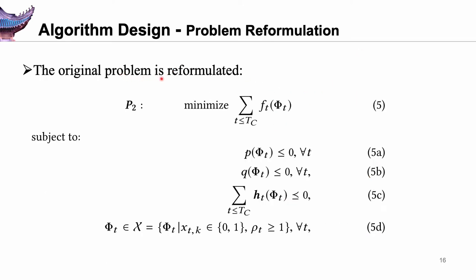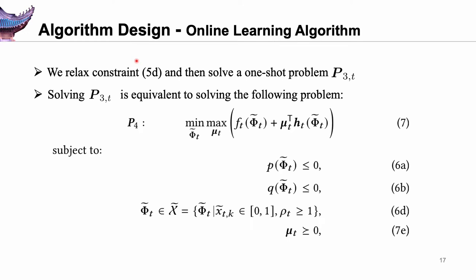Therefore, the original problem is reformulated. Our aim is to make decisions online. However, some system inputs can only be known after decisions at time T are made, which is a typical scenario of online learning. To this end, we develop an efficient online learning algorithm by alternately optimizing primal variables and Lagrange multipliers. First, it relaxes constraint 5d and then solves a one-shot problem. Solving P3T is actually equivalent to solving the problem of equation 7. The objective function is the representation of the Lagrangian, where mu is the corresponding Lagrange multiplier. Our online learning algorithm alternately minimizes L_t regarding phi through a modified descent step and maximizes L_t regarding mu through a standard descent step.